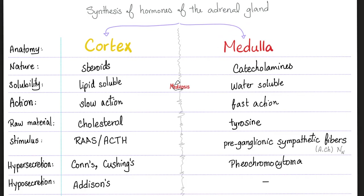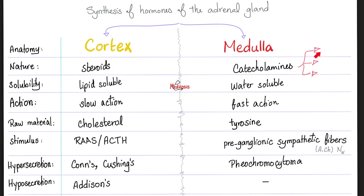The stimulus for the adrenal medulla is different — treat it like a ganglion. It needs preganglionic sympathetic fibers to stimulate it. When the adrenal medulla gets stimulated, it secretes catecholamines: epinephrine, norepinephrine, and dopamine — also called adrenaline, noradrenaline, and dopamine. If the adrenal cortex secretes too much aldosterone, that's Conn syndrome. Too much cortisol is Cushing syndrome. If it secretes nothing, that's Addison disease. Too much epinephrine, norepinephrine, or dopamine from the medulla is called pheochromocytoma.